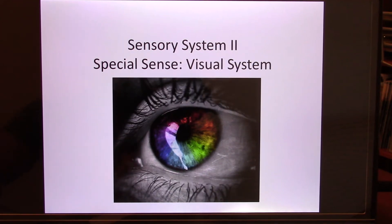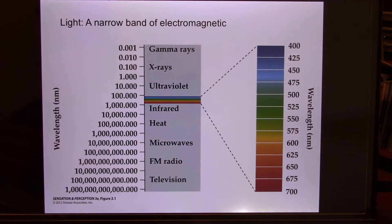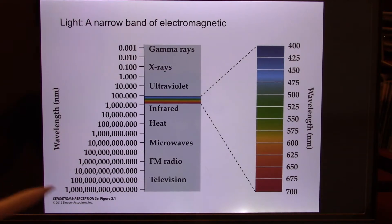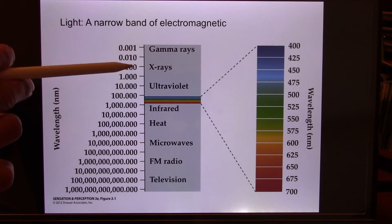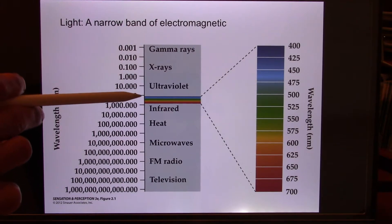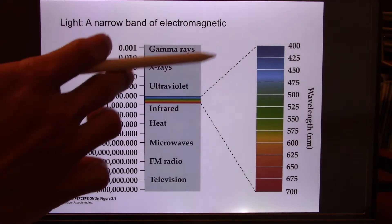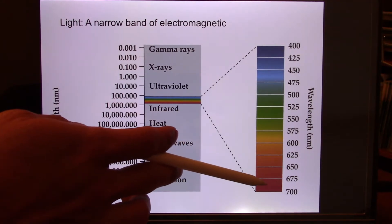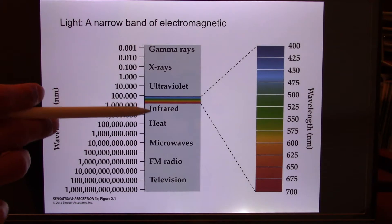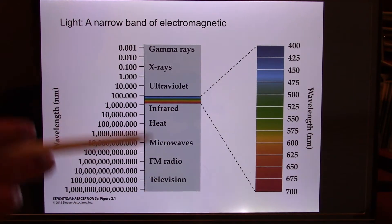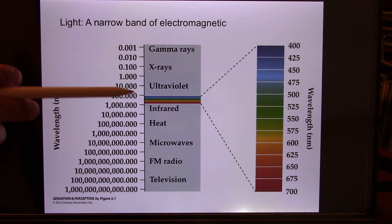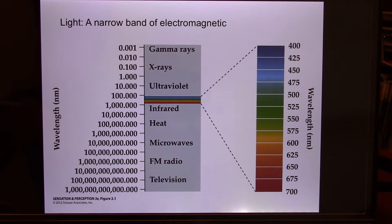Let's get started — we're in the spatial senses, visual system. Your visual system picks up light, specifically visible light, which is a very small range of the electromagnetic spectrum. The electromagnetic spectrum goes from gamma rays, X-rays, UV, and then this small range — from about 350 to 700 nanometers — called visible light, then continues to infrared, heat, microwave, radio, and television. We can only see this very small range.